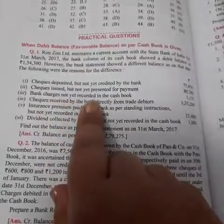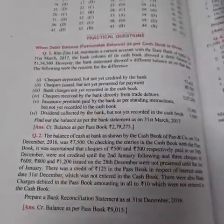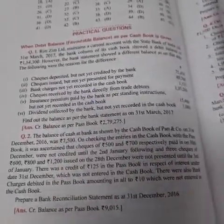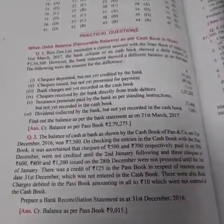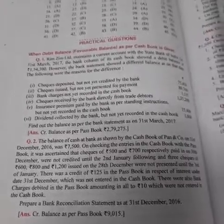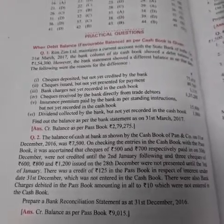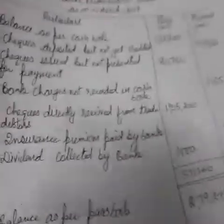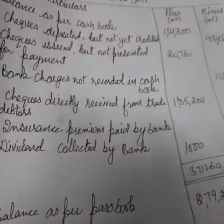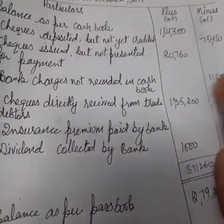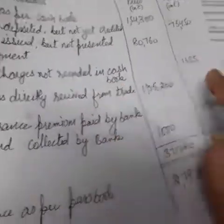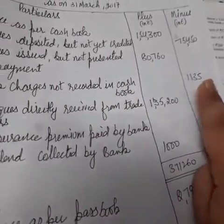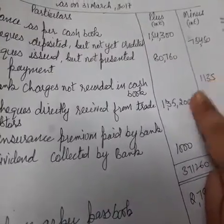The third transaction: bank charges not yet recorded. Bank charges mean sometimes the bank charges some fees from us for the functions it performs. It means the bank is debiting our bank account — decreasing the amount. That is why I have shown this balance on the minus side. I have written 'bank charges not recorded in cash book' — the balance is 1,135. We will also decrease our cash book accordingly.